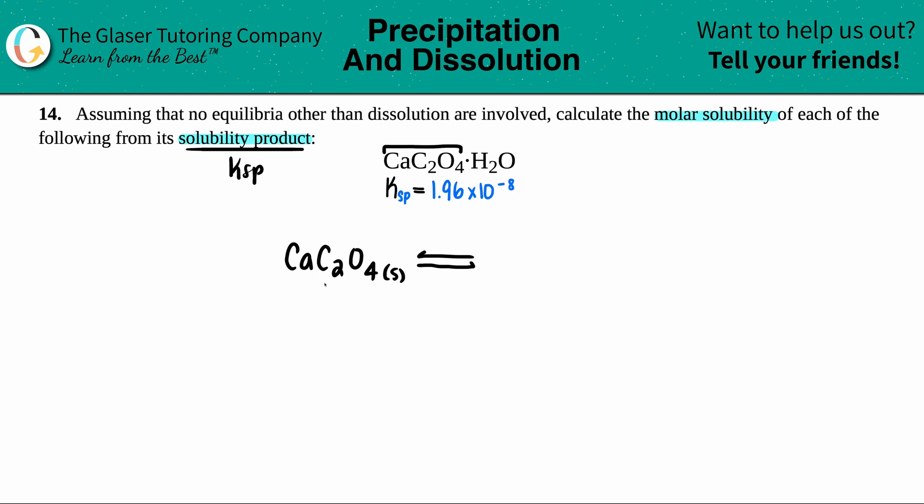But I noticed that I have a polyatomic here. C2O4 is oxalate, and polyatomics always stick together. So the break would have to be between the calcium and the C2O4. So I have Ca plus C2O4.